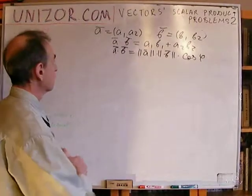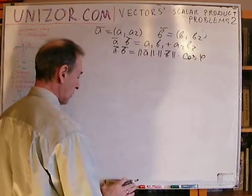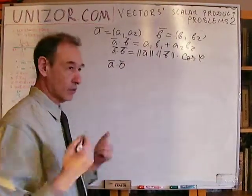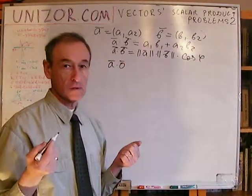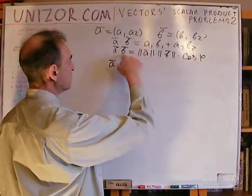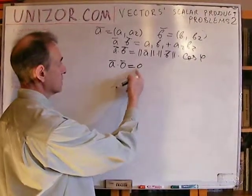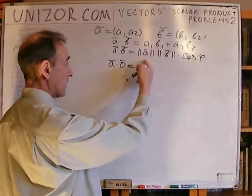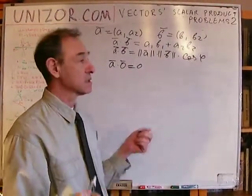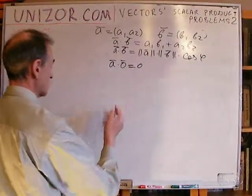Rule number two: if I multiply any vector by a null vector — one which has length zero — then I will get zero. Obviously, if B is a null vector, its length is zero by definition, so this is the length of A multiplied by zero and by the cosine of the angle, which doesn't really matter because the result is zero. So this rule is satisfied as well.